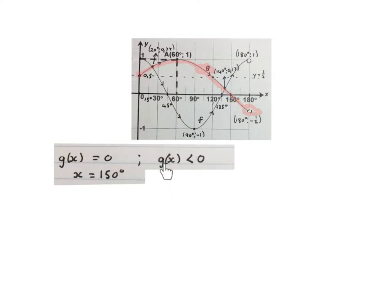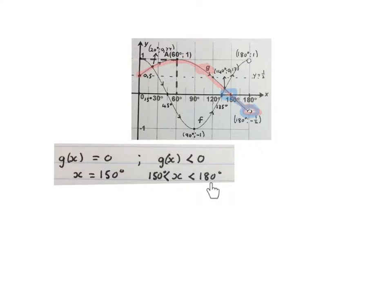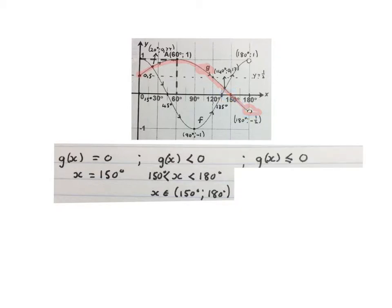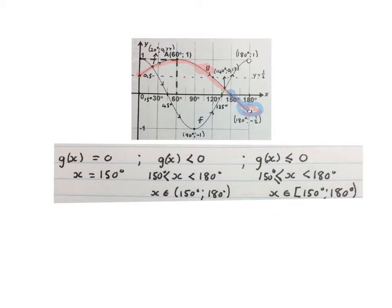The next question asks where is g of x smaller than 0 — in other words where is it under the x-axis. The answer is x is bigger than 150 degrees and x is smaller than 180 degrees. You can also write it in interval notation. The next question asks where is g of x smaller than or equal to 0. The answer covers that same area: x is bigger than 150 degrees and x is smaller than 180 degrees, and you can write it in interval notation.